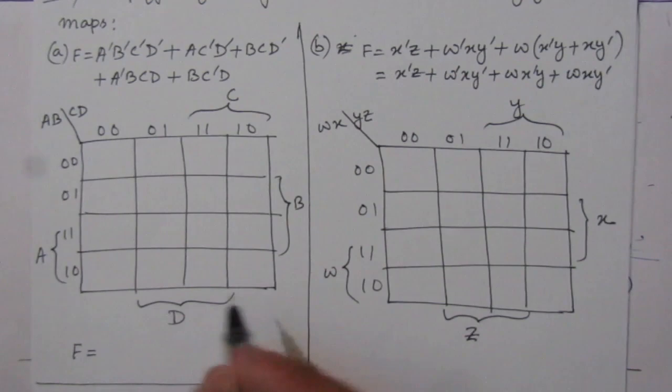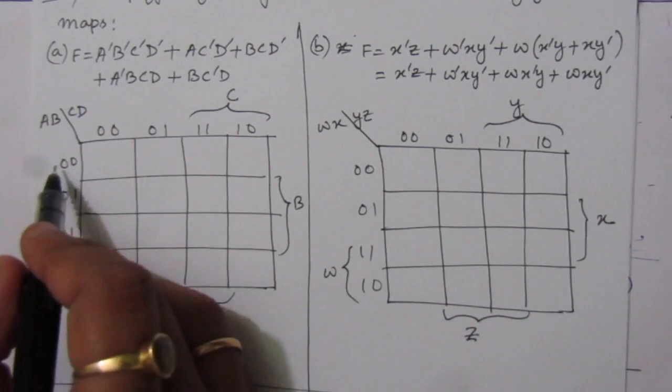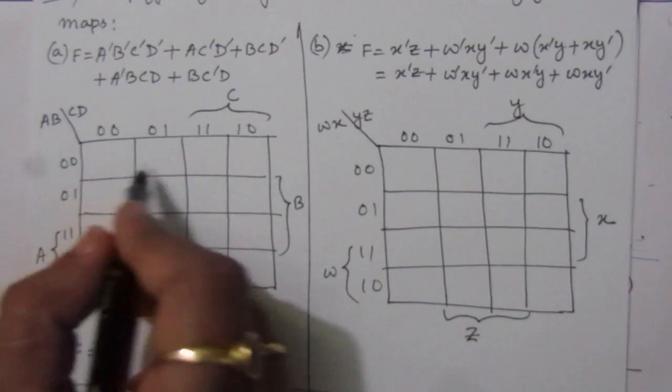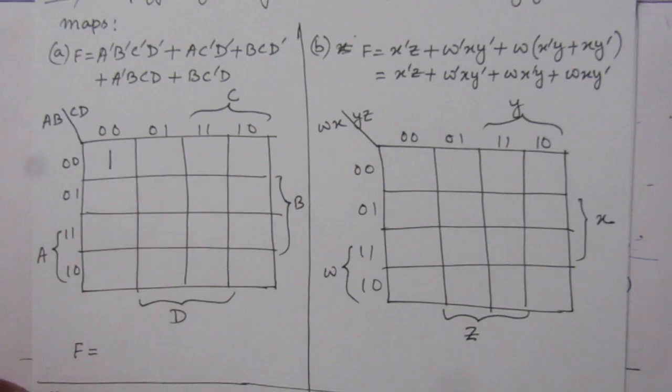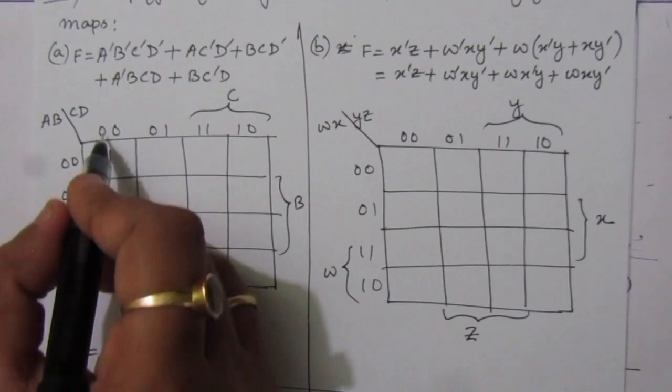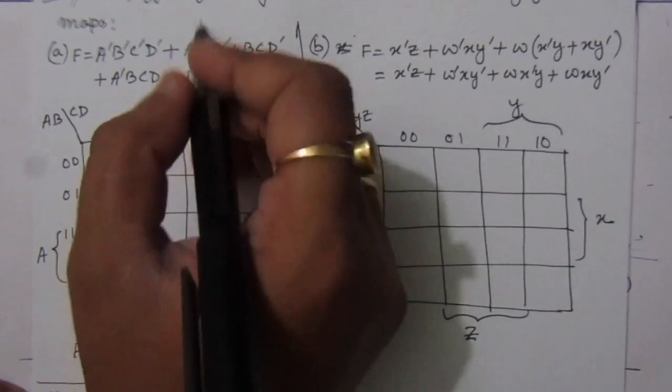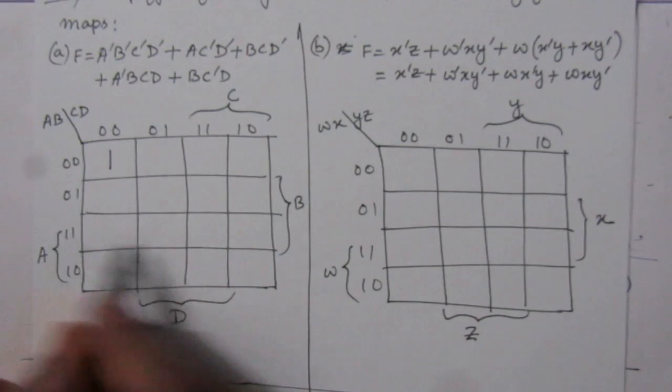Now let us place the terms. For A-bar B-bar C-bar D-bar: A=0 means A-bar, B=0 means B-bar, C-bar D-bar corresponds to the first column. The intersection of the first row and first column gives us the cell where we place a one. For the second term, A C-bar D-bar: C-bar D-bar is the first column, and A corresponds to the third and fourth rows, so we place ones in those two cells.